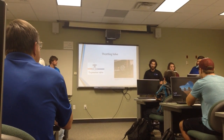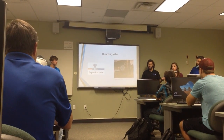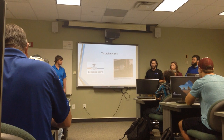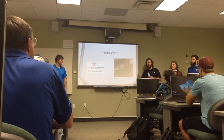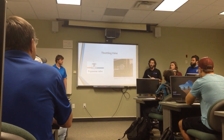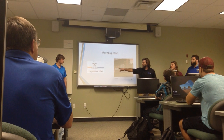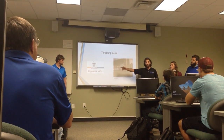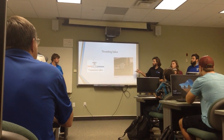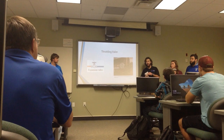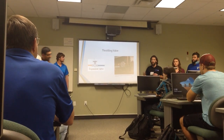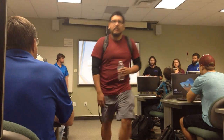Next is the throttling valve. It takes the fluid from the condenser and runs it through a hole, essentially. It reduces the pressure and the temperature but increases the velocity — think of a water hose with your thumb over it; it speeds up but pressure and temperature drop. The red in the diagram indicates hot refrigerant coming in and cold fluid coming out of the expansion valve. The expansion valve also has a piston that regulates how much fluid comes out, so the next component doesn't freeze up or get too cold to function.